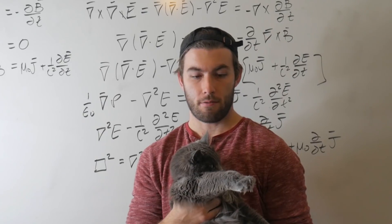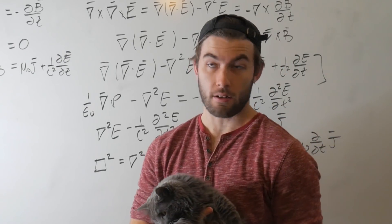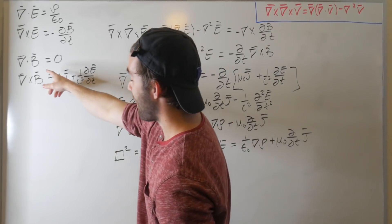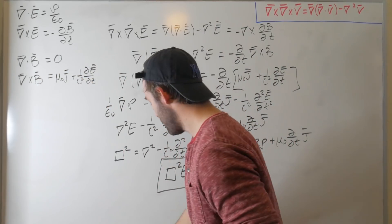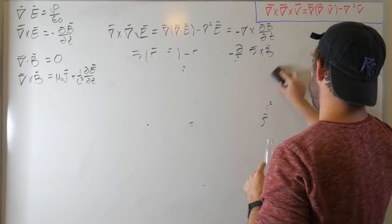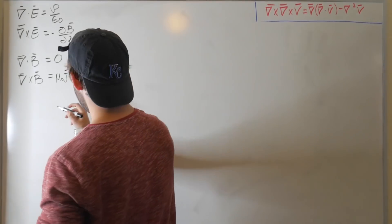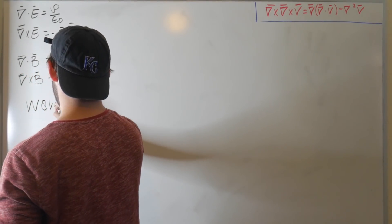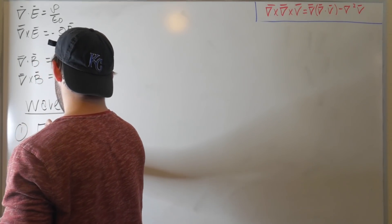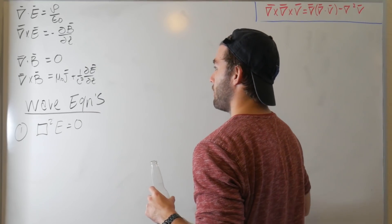Let's do it for magnetism now. The electric field case was really easy, and the magnetic case is even easier because when we have to use the divergence of the magnetic field, we already know it's zero, so this is going to be super easy. Let's write down wave equation one: box-squared E equals zero, assuming no charges to interact with. Now let's take the curl of the magnetic field.